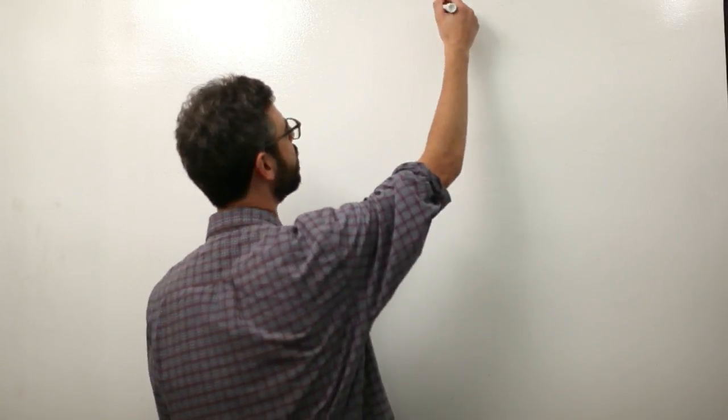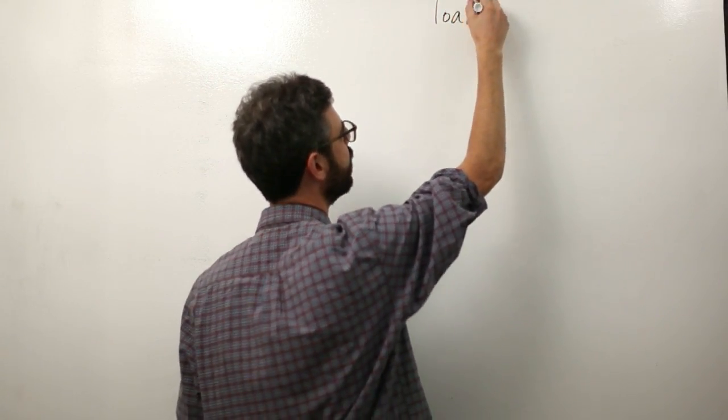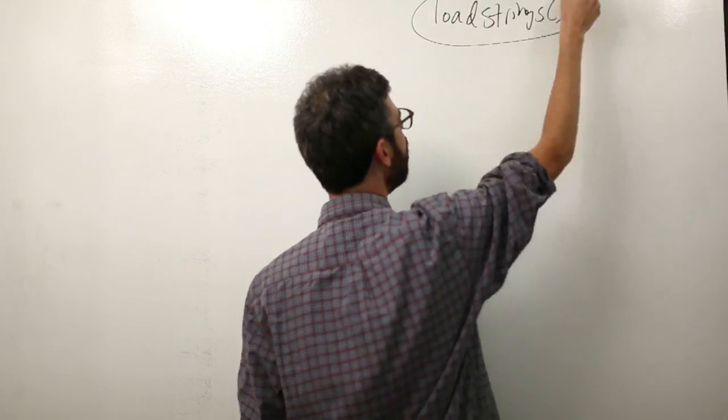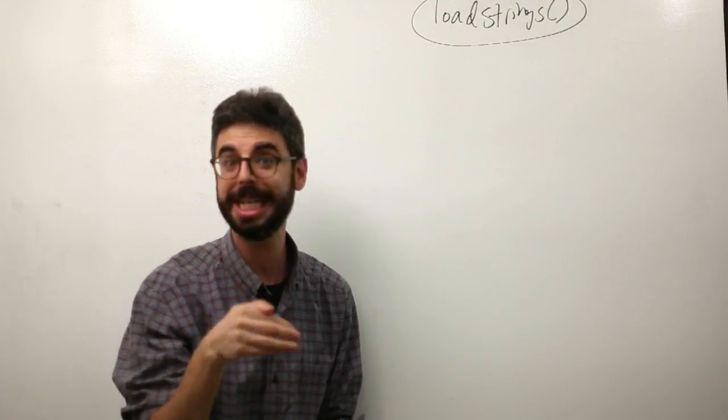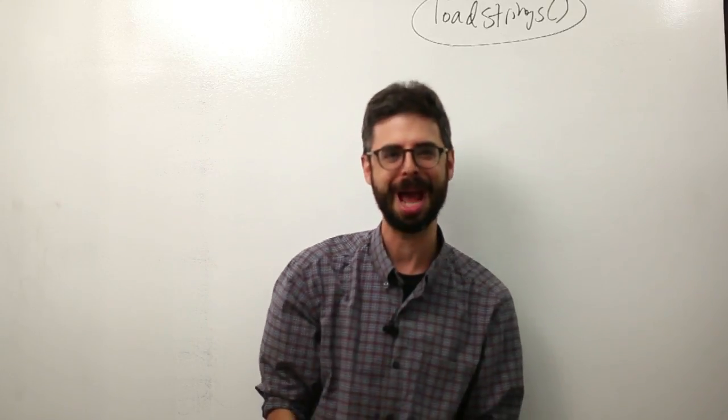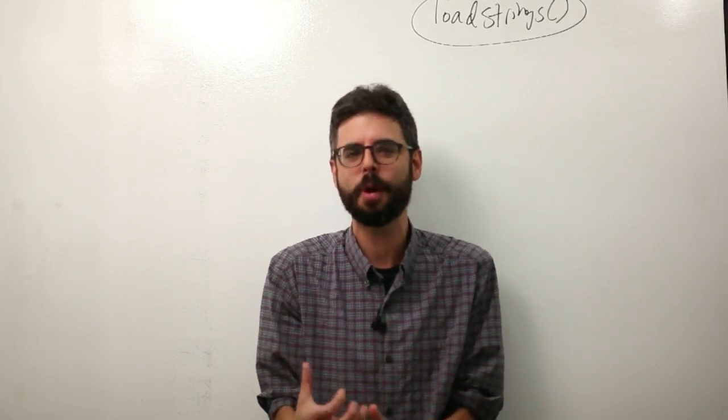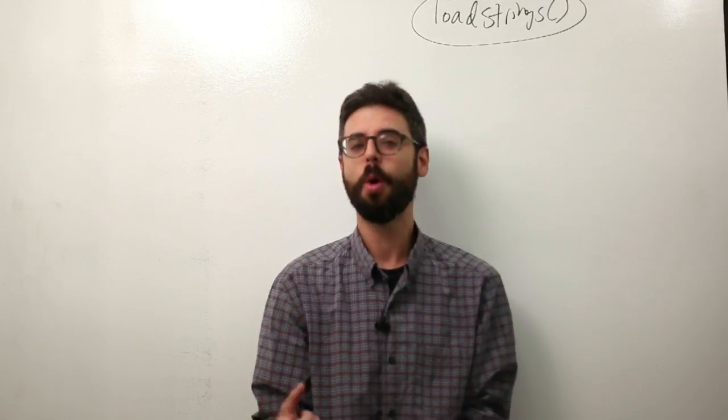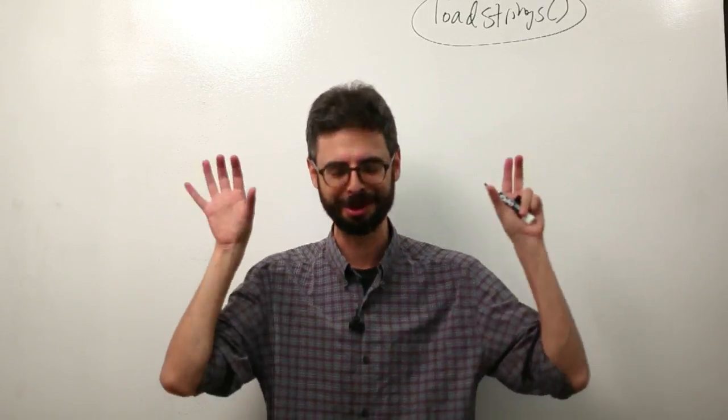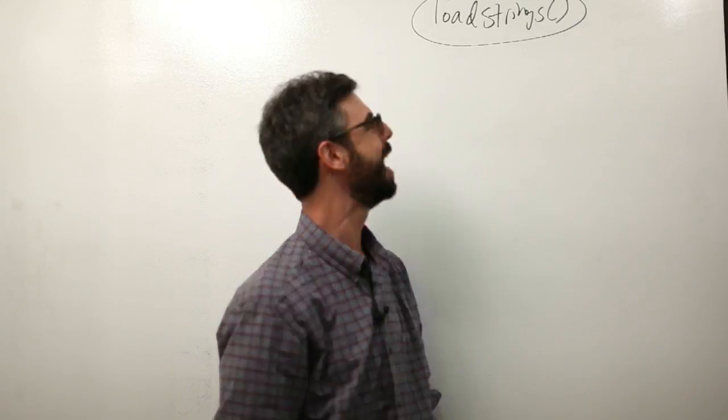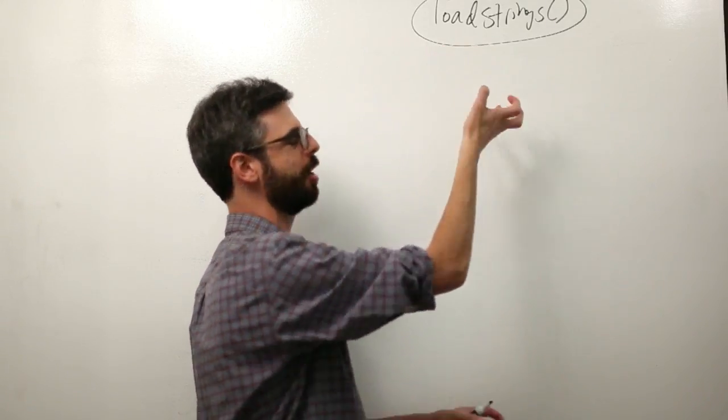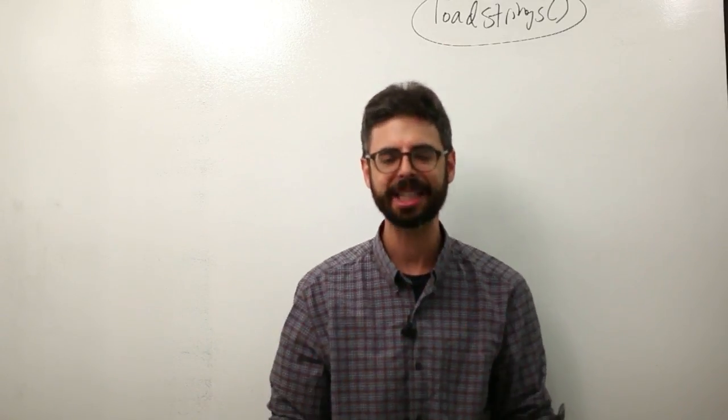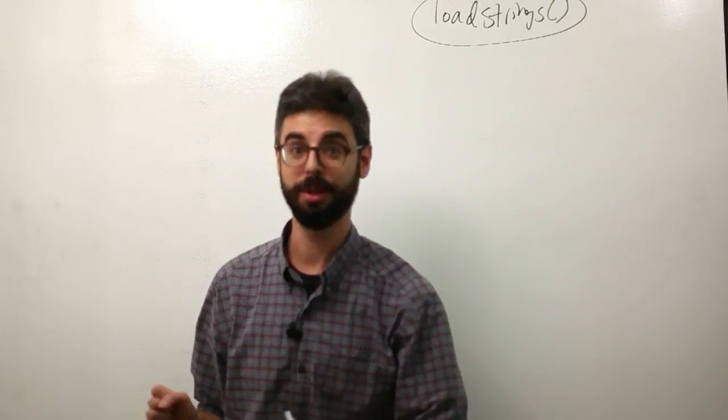The way that we pull that stuff into Processing is with the function loadStrings. Now there are going to be other loading functions we'll see in a video or two because sometimes the data comes in a very specific format like comma separated values or XML or JSON. We'll get into what those things are and we might use loadTable or loadJSON or loadXML. But for any generic raw text, loadStrings is going to do the job.